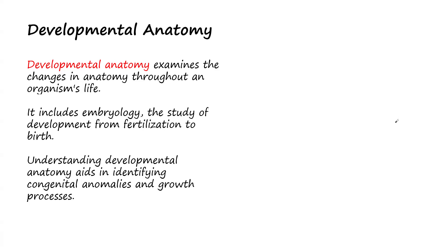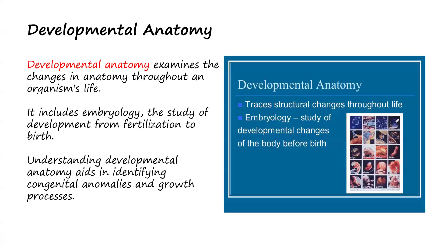We start from the sperm and egg cell joining together through fertilization, and keep developing until the stage of birth — this entire process falls under embryology. Understanding developmental anatomy aids in identifying congenital abnormalities, that is, problems associated with an inborn child, and it also aids in understanding growth processes and how a child develops.